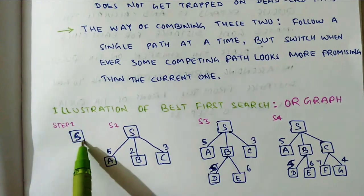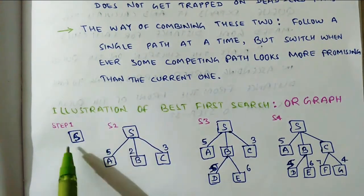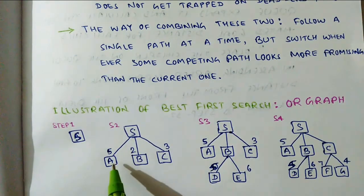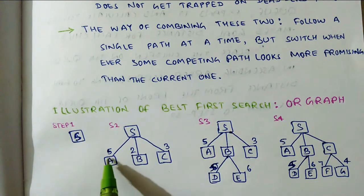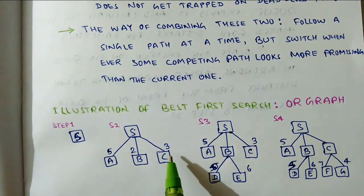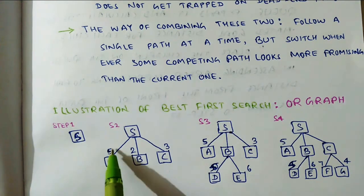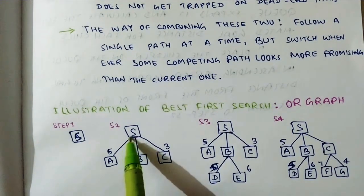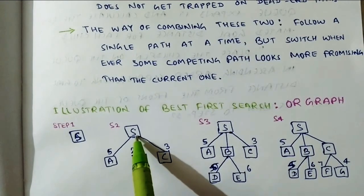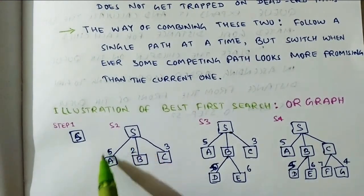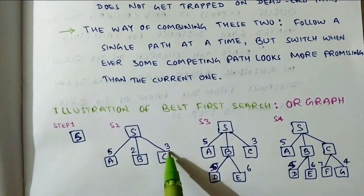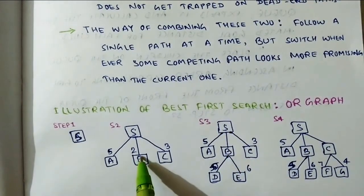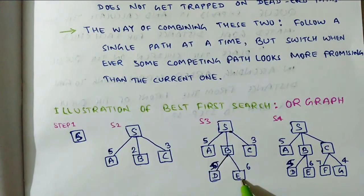Suppose we have a single start node. In step 2, we explore its children. S is having 3 children: A, B, and C. Each node has been given a few values — that is the cost of the particular node, which is the heuristic value. We can see which is the most promising path. The minimum of the values 3, 2, and 5 is 2, so this path is selected by Best First Search Technique. We then explore this node, finding children D and E — D has cost 5 and E has cost 6.